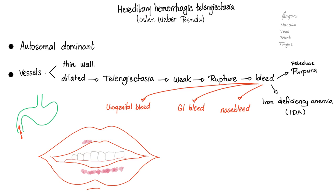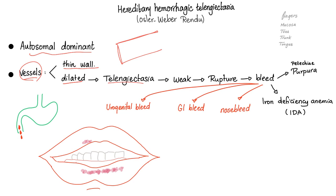Let's talk about hereditary hemorrhagic telangiectasia — Osler-Weber-Rendu syndrome. It's autosomal dominant, which means it runs in the family. So if I have it, usually my mom or dad has it, and my grandma or grandpa has it. What's the issue? The vessels are thin, the wall is very thin and dilated — vessel dilated, wall is thin — which leads to telangiectasia.